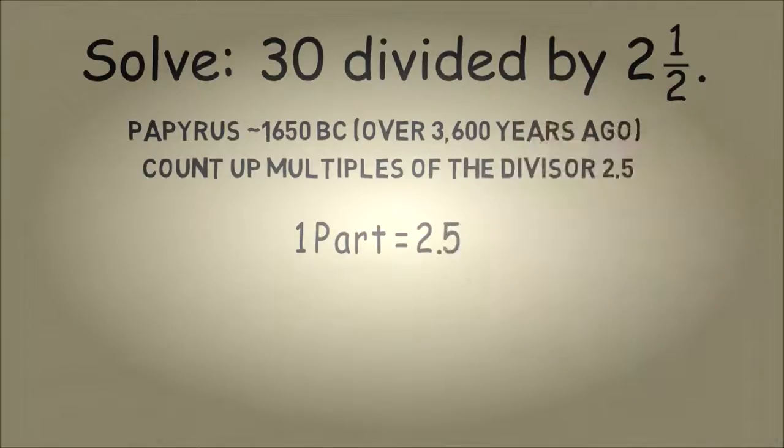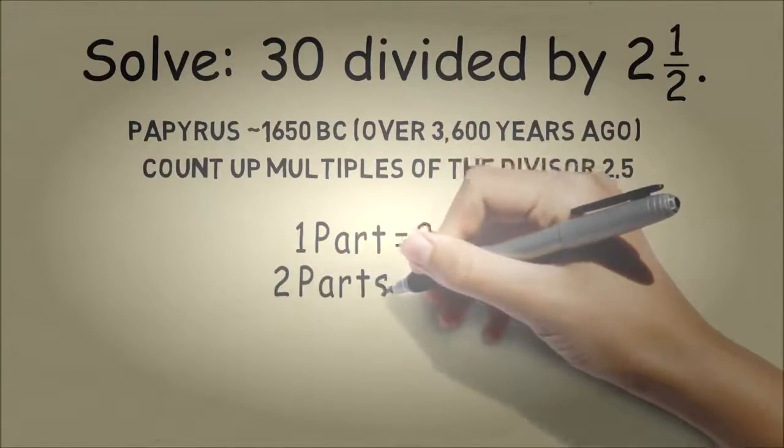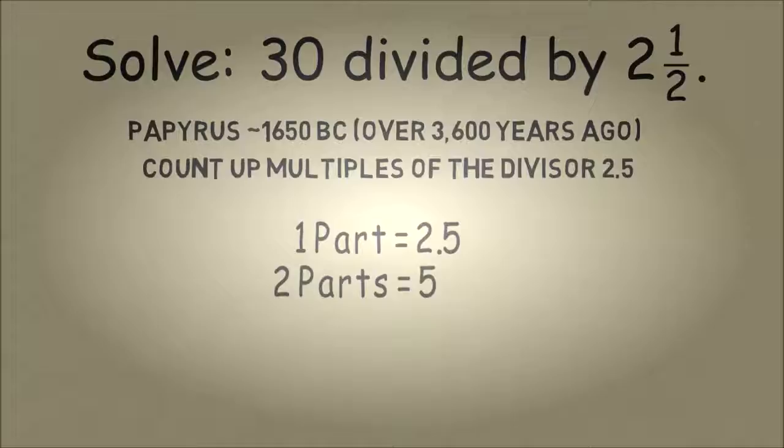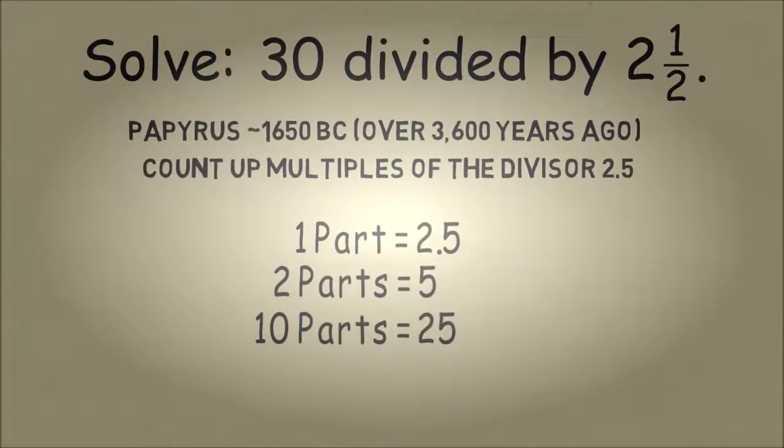So they started out by saying one part is 2 and a half. And we're going to count up parts until we get to 30. So 2 parts of 2 and a half, we double 2 and a half to get 5. And then we can also take 10 parts of 2 and a half to get 25. And now we've pretty much solved the problem.